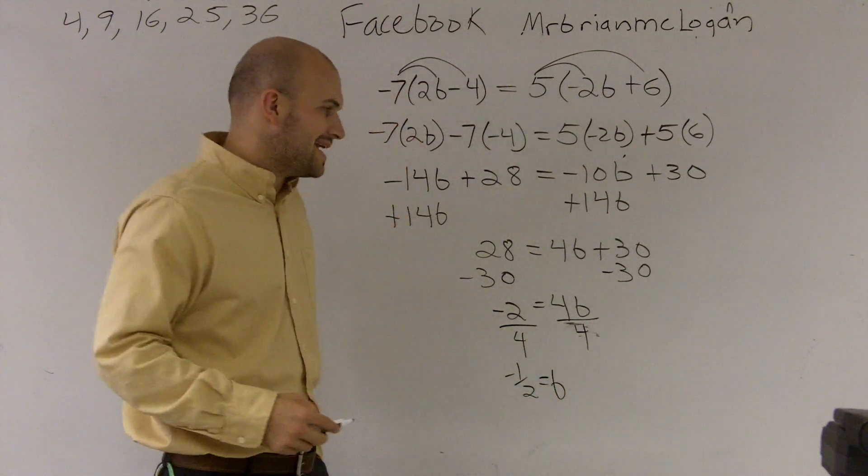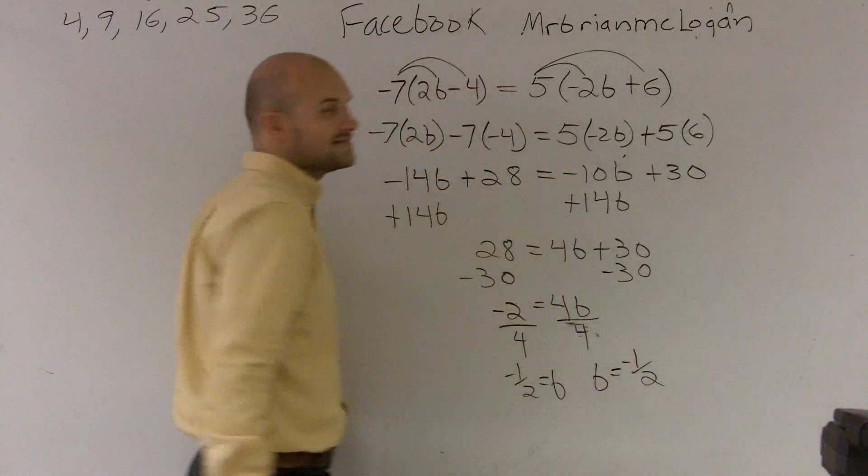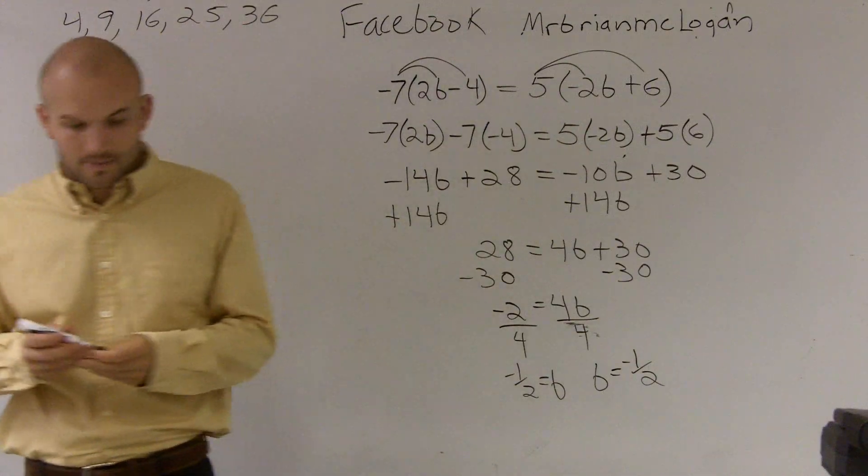I get negative 1 half is equal to b. And like I said, right at the end you can easily just write b equals negative 1 half. And that is how you solve a problem with a variable on both sides with distributive property.